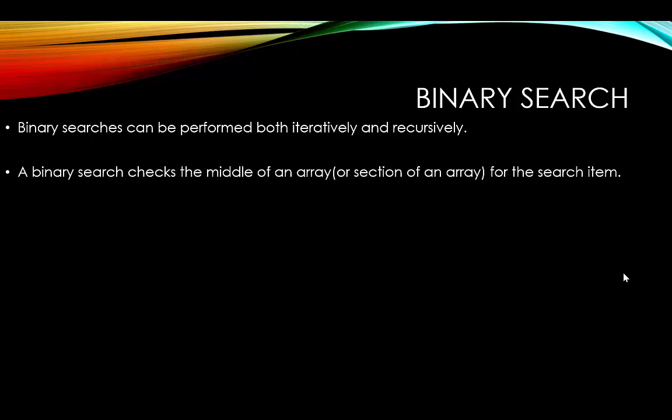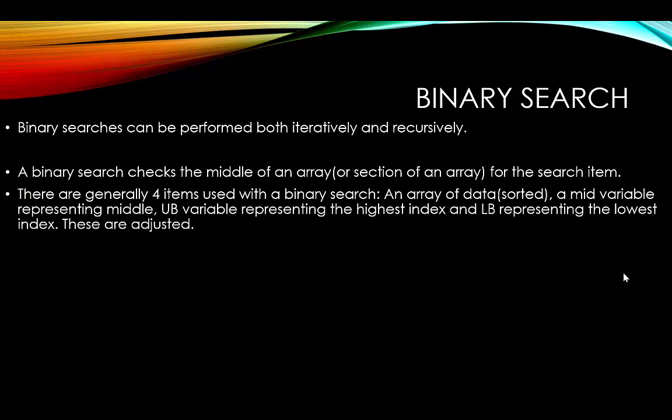A binary search checks the middle of an array, or the section of an array that you're currently looking at, for the search item you are looking for. There are generally four items used with a binary search: an array of data which has been sorted, a mid variable representing the middle, a UB variable representing the upper bounds (the highest index), and LB representing the lower bounds (the lowest index).